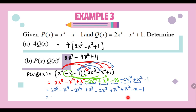Now we simplify our answer: 2x⁵ - 3x⁴ - x³ + 2x² - x - 1. This is slightly tedious compared to addition, subtraction, or scalar multiplication. I hope you can understand — the more exercise you do, the simpler it will become.